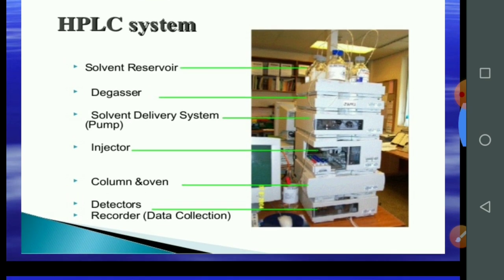Question number five: what are the different parts of HPLC? Number one, solvents; number two, degasser; number three, solvent delivery pumps; number four, injector; number five, column; number six, detector; and the last one is recorder.